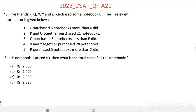First: Z purchased 8 notebooks more than X did. Second: P and Q together purchased 21 notebooks. Third: Q purchased 5 notebooks less than P did. Fourth: X and Y together purchased 28 notebooks. Fifth: P purchased 5 notebooks more than X did.